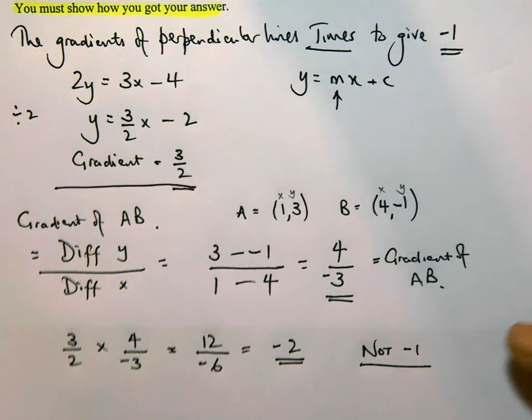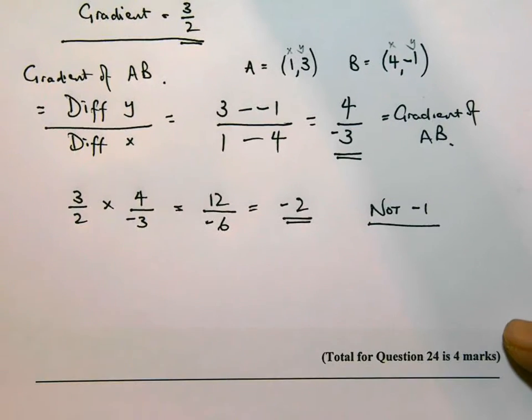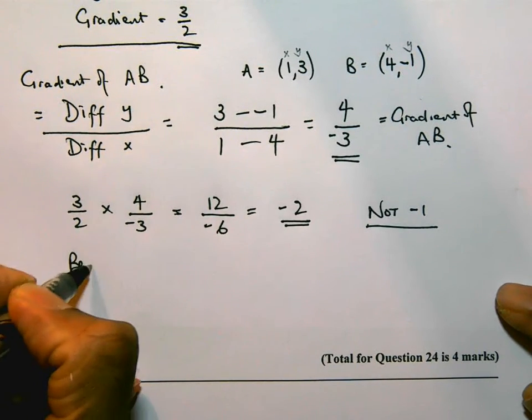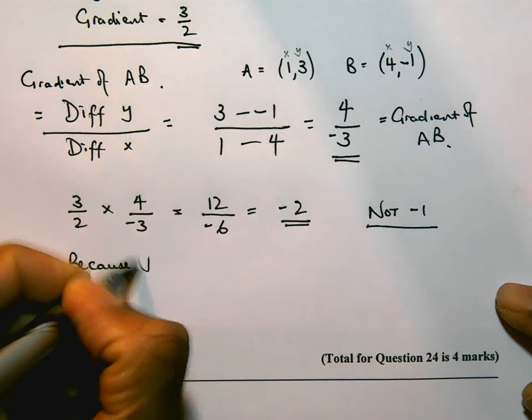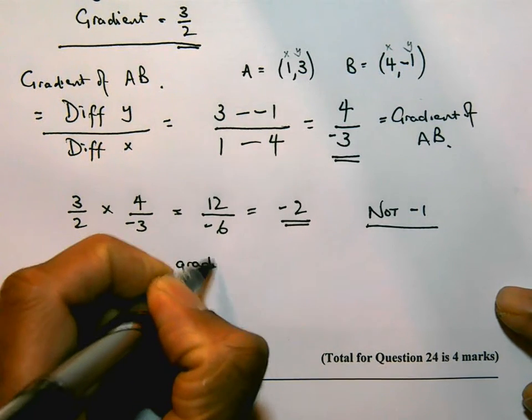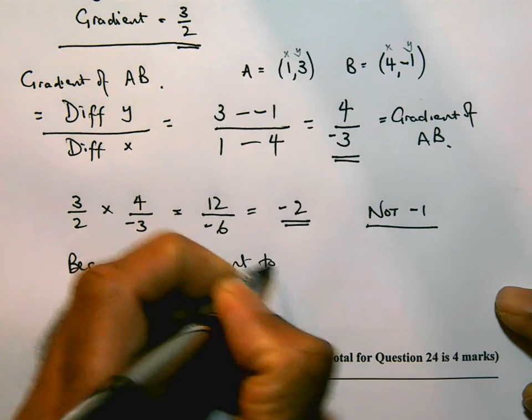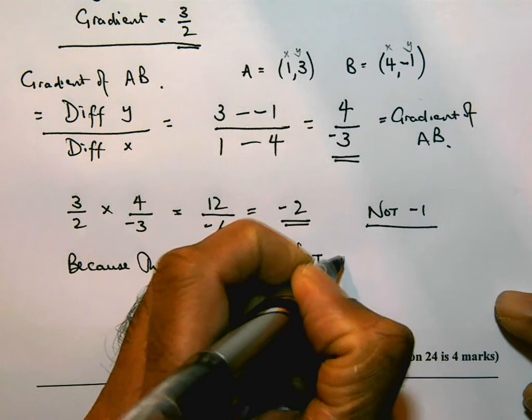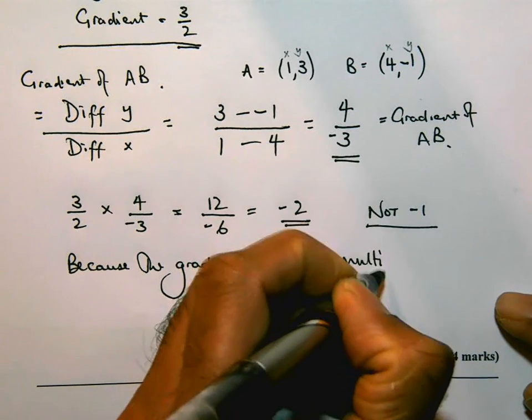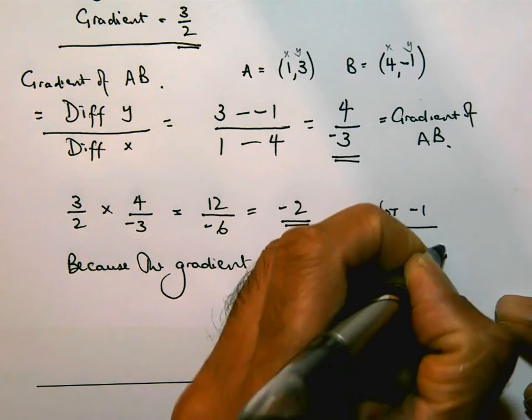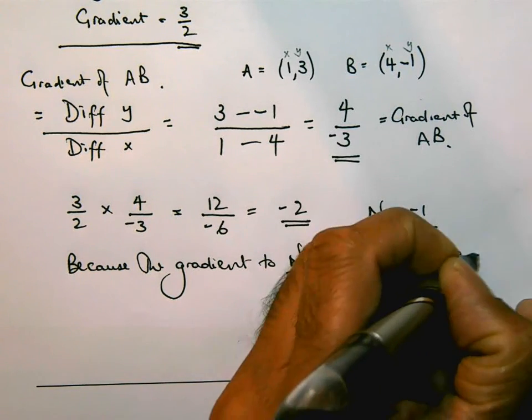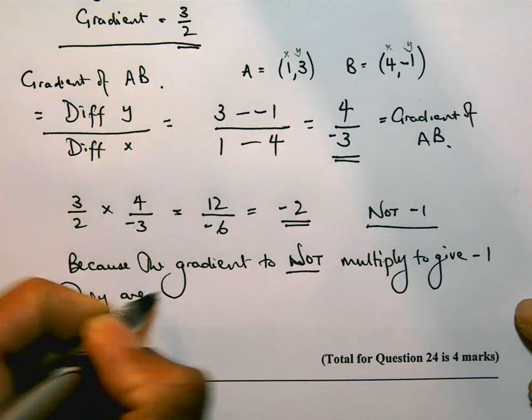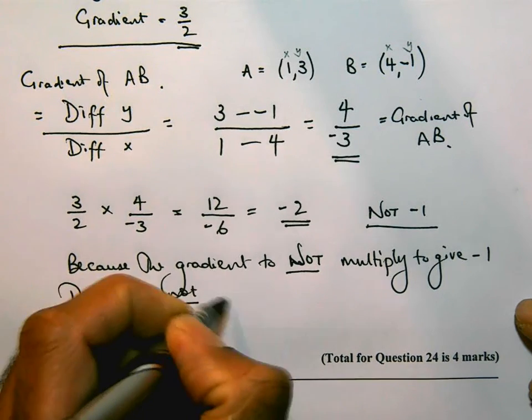So what that means is that the lines are not perpendicular. Because the gradients do not multiply to give -1, they are not perpendicular.